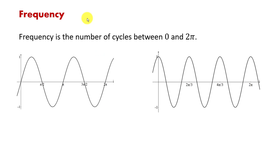Next we're going to talk about frequency of a graph. Frequency is the number of cycles that can fit between zero and two pi.